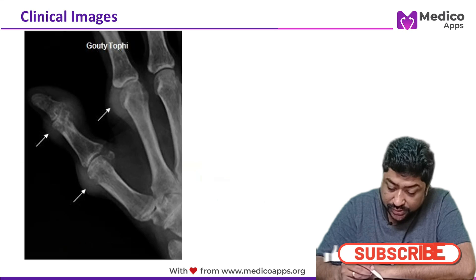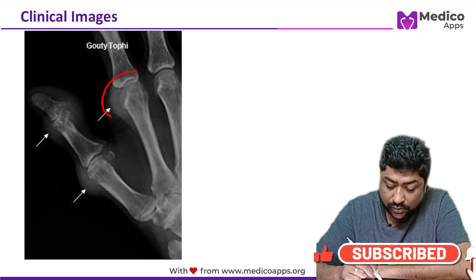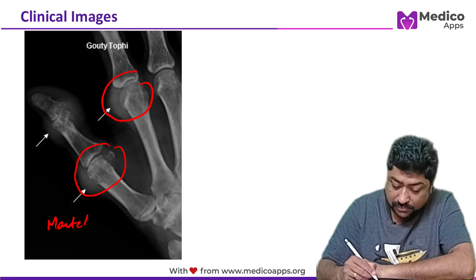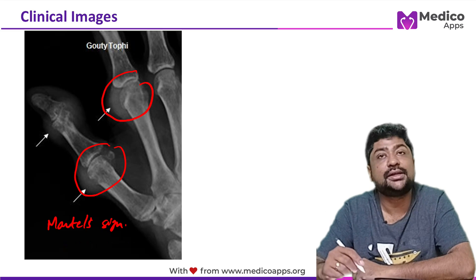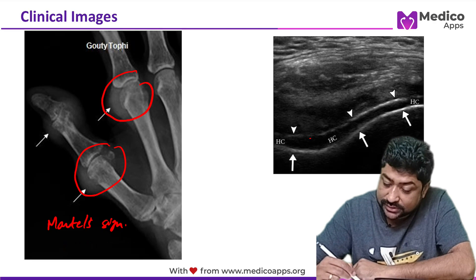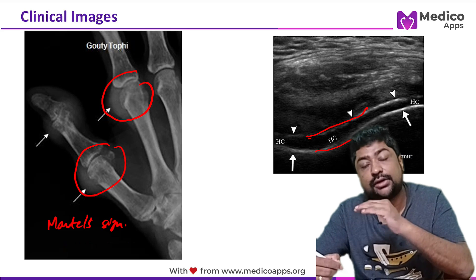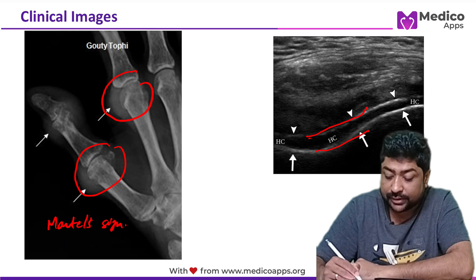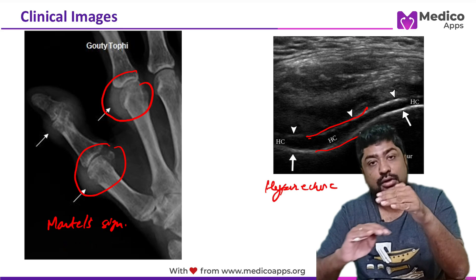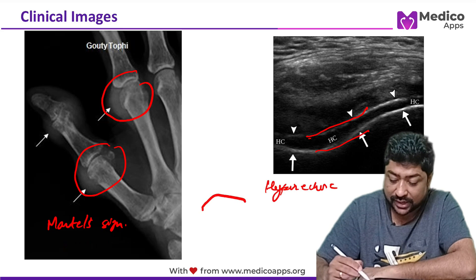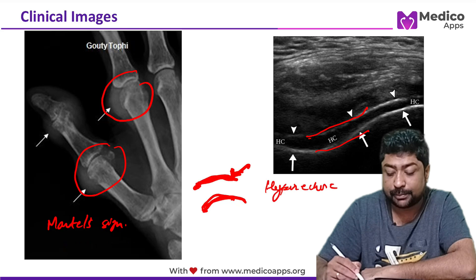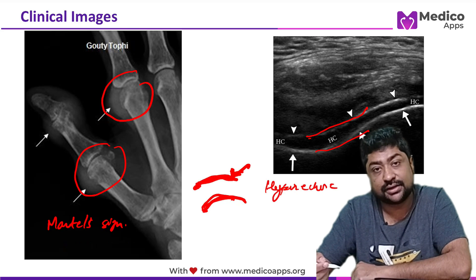Looking at the Martel sign on X-ray — this represents sclerotic damage of the articular surface. The double contour sign seen on USG: the bone forms one hyperechoic contour, and the uric acid crystal deposits on the articular surface form a second hyperechoic layer, resulting in the double contour sign. This is seen specifically in gout cases.